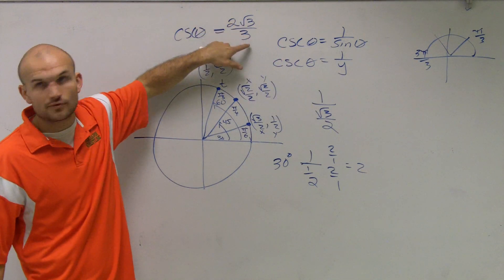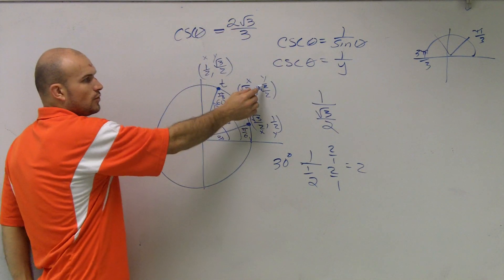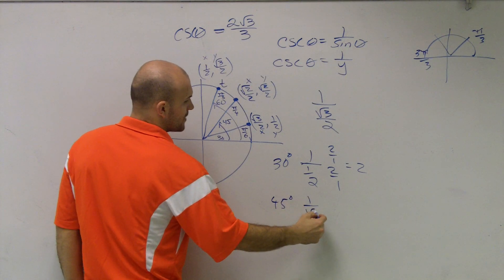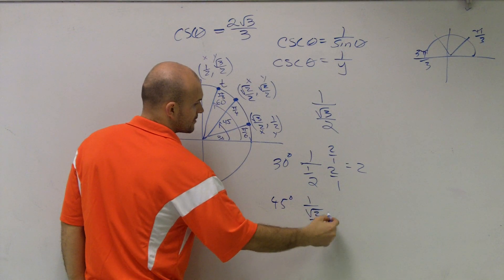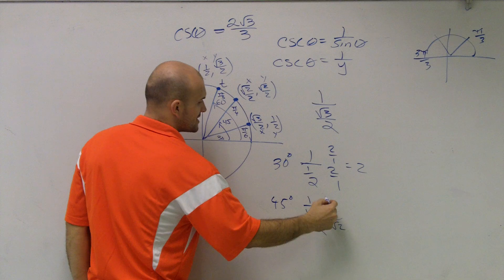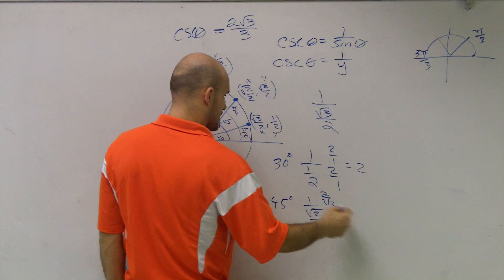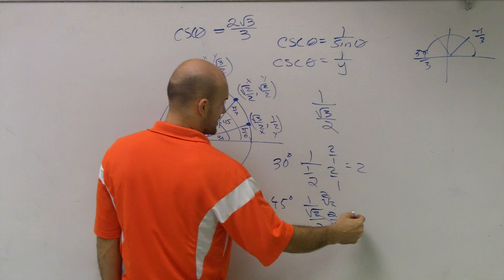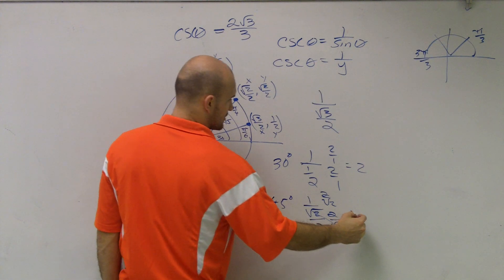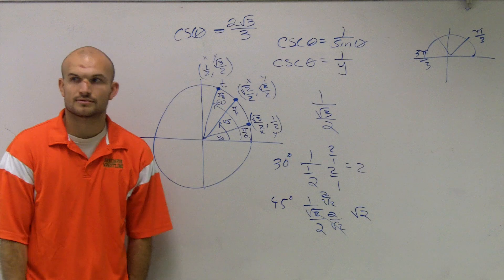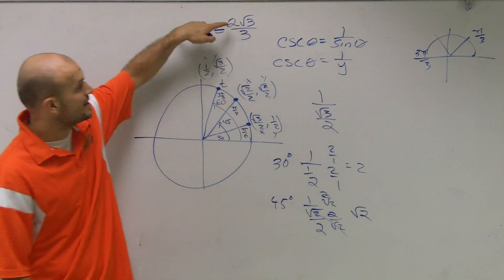If I do 1 over radical 2 over 2 for 45 degrees, that would be 1 over radical 2 over 2. When I rationalize this denominator, if that cancels out, I get square root of 2 when I rationalize the denominator. Well, that's again not my answer.